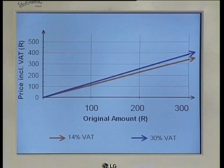Making a sketch of a function is different to plotting a function. Firstly, when we plot a function on the Cartesian plane, we normally use a table of values to assist us. This way, we get an accurate idea of the exact position of the points we plot.